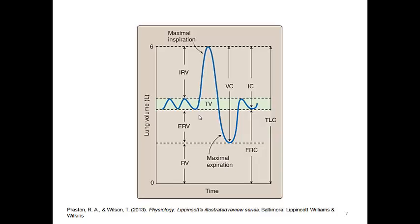You need to know tidal volume, inspiratory reserve volume, expiratory reserve volume, and vital capacity. The residual volume is the volume of air remaining in the lung after a maximal expiration, approximately 1.2 liters. As we saw in the lab, the tidal volume is approximately half a liter.